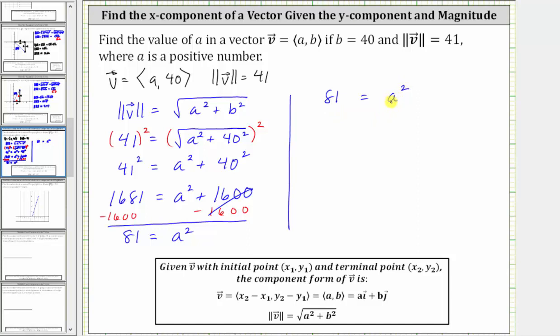But remember algebraically when we do this, we will have both a positive and negative value. So we square root both sides of the equation and include a plus or minus on the left. Simplifying on the right first, the square root of a squared is equal to a. On the left we have plus and minus the square root of 81, which simplifies to plus or minus nine.